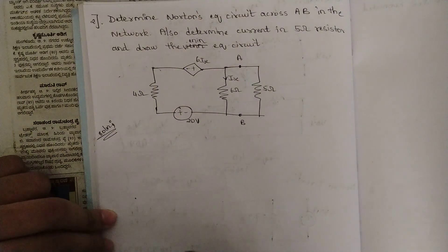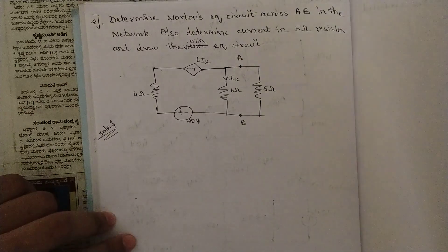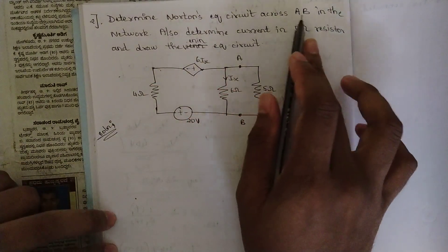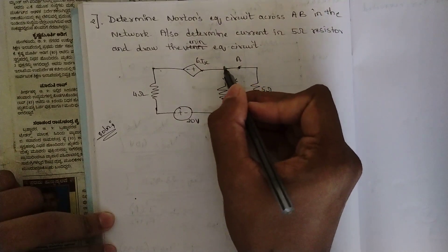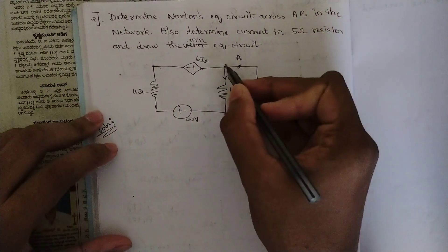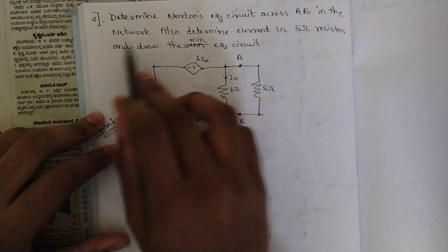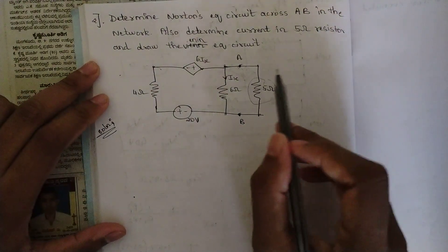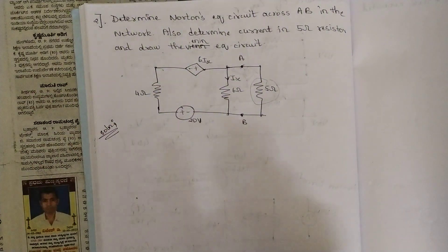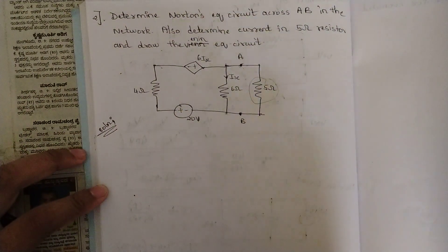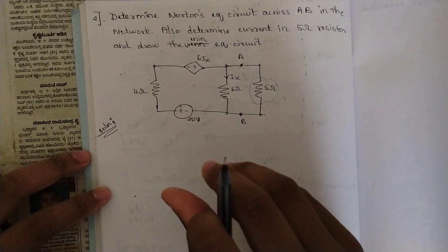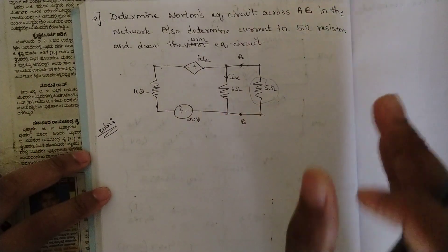Those who have not seen my previous videos, please see those first. This is the second question: determine Norton's equivalent circuit across terminals A and B. Also determine the current in the 5 ohm resistor and draw the Thevenin's equivalent circuit. That is very easy — once we get Norton's circuit, we convert the Norton's current into an equivalent Thevenin's voltage, shifting the impedance from parallel to series.